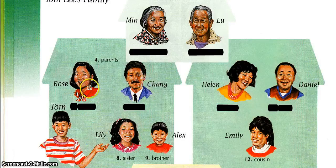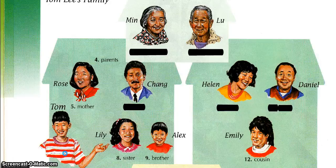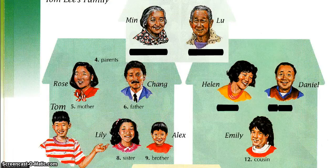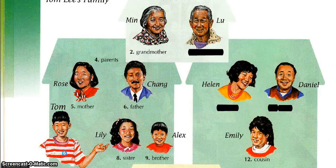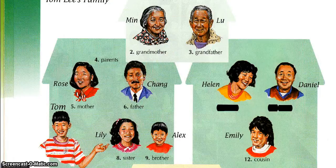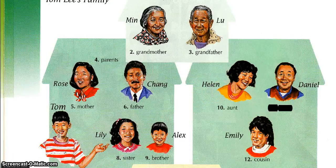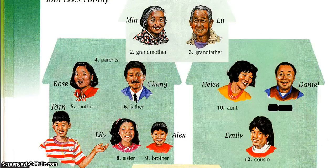Rose is his mother and Chang is his father. Rose and Chang are his parents. Man is his grandmother and Lou is his grandfather. Helen is his aunt and Daniel is his uncle.